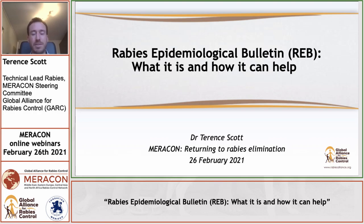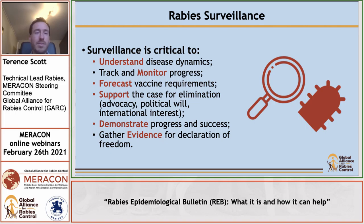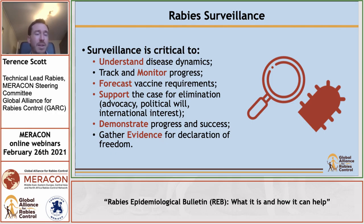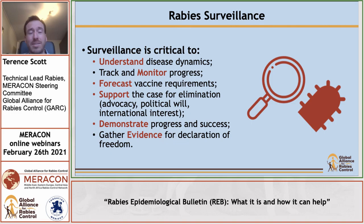Thank you very much for that introduction. As we've heard from the sessions, surveillance is absolutely critical to understand disease dynamics, to track and monitor progress, to forecast vaccine requirements in both the human and animal health sectors, to support the case for elimination in terms of advocacy, political will, and international interest, and of course getting the funding needed to drive elimination programs. You need good surveillance to demonstrate progress and success, and most importantly to gather evidence for the declaration of freedom from rabies.